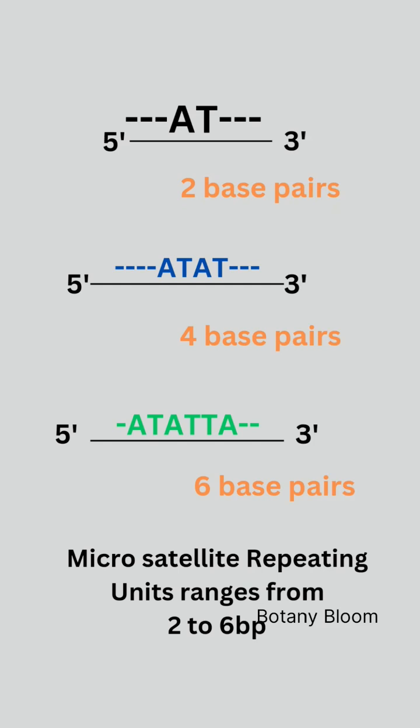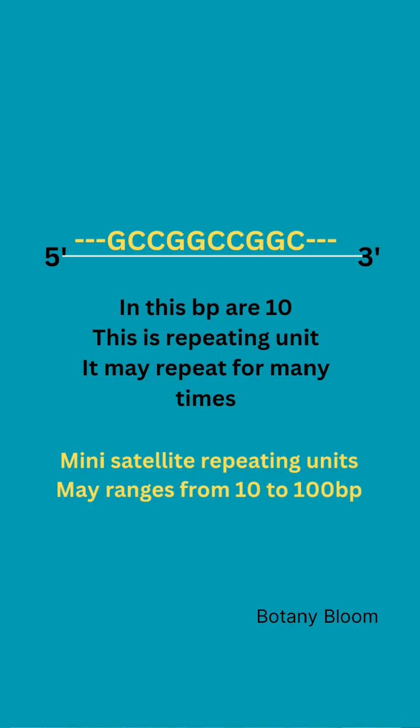In micro satellite, the repeating units may contain two base pairs and may go up to six base pairs. In mini satellite, the number of repeating units may vary from 10 to 100 base pairs.